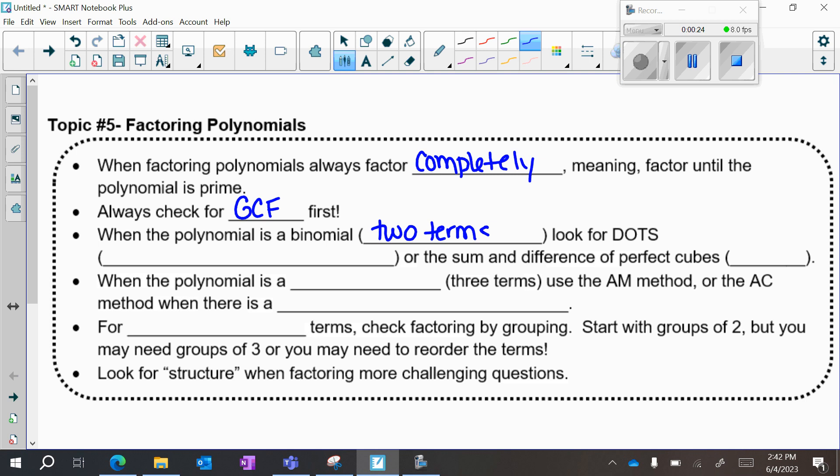Look for DOTS, which is the difference of two perfect squares, or if it's two terms and it's not DOTS, check for the sum and difference of perfect cubes, which we use the acronym SOAP for in order to help us remember the signs.